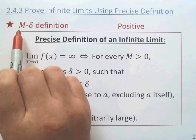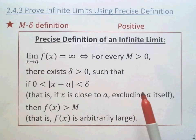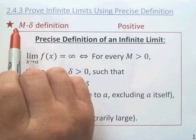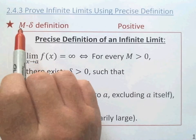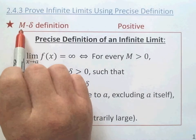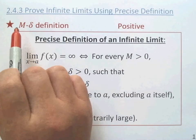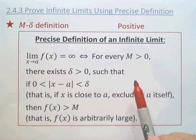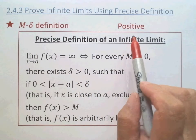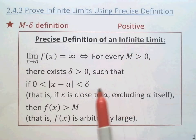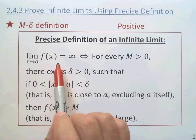In the epsilon-delta definition, remember, epsilon is a very small, arbitrarily small number. Here, the M is an arbitrarily large number. So let's look at the positive infinity limit first — how to define a limit as positive infinity.